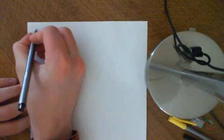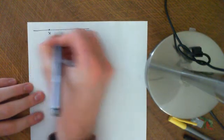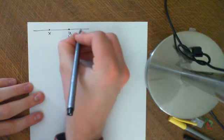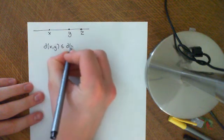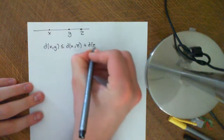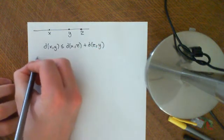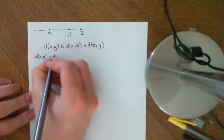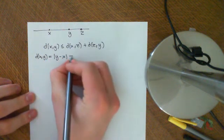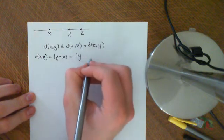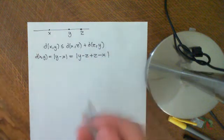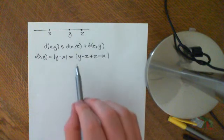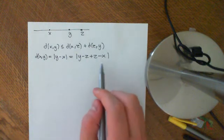Now all we have to check is that the triangle inequality holds. We want to make sure that for points x, y, and z in the real numbers, d(x, y) ≤ d(x, z) + d(z, y). The distance between x and y equals the modulus of y minus x. We can do a clever trick here, which is to add and subtract the same thing — if we subtract off z and then add z back on, we get that d(x, y) equals the modulus of (y minus z) plus (z minus x).